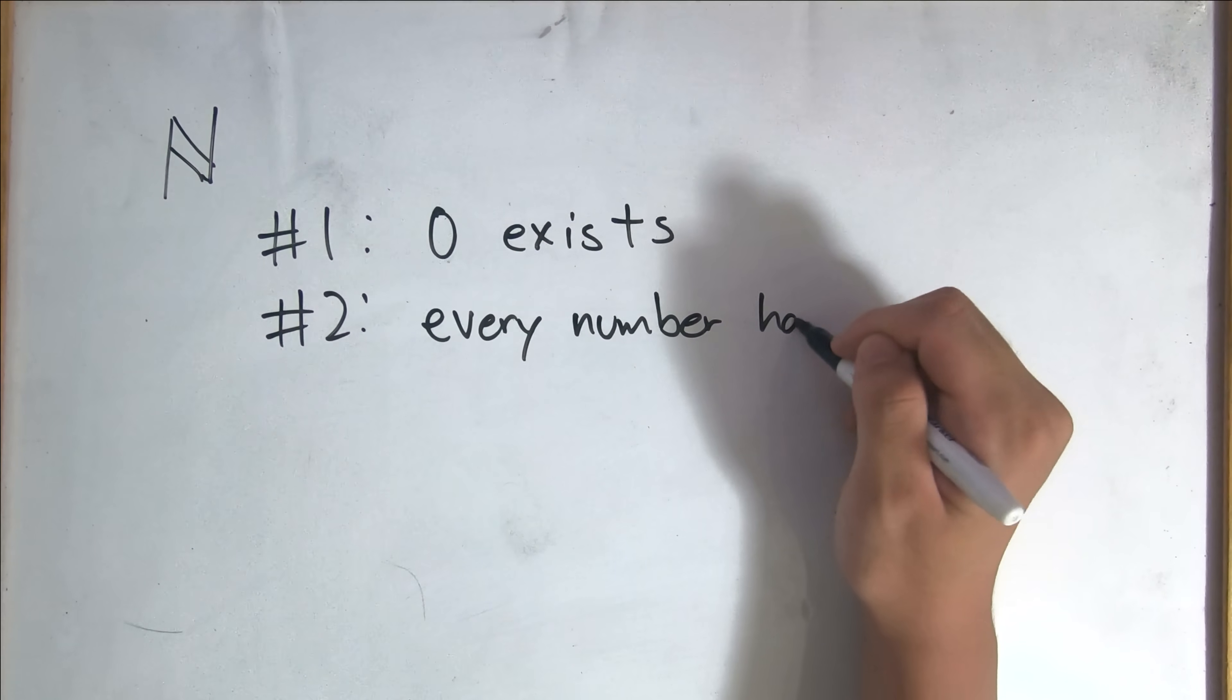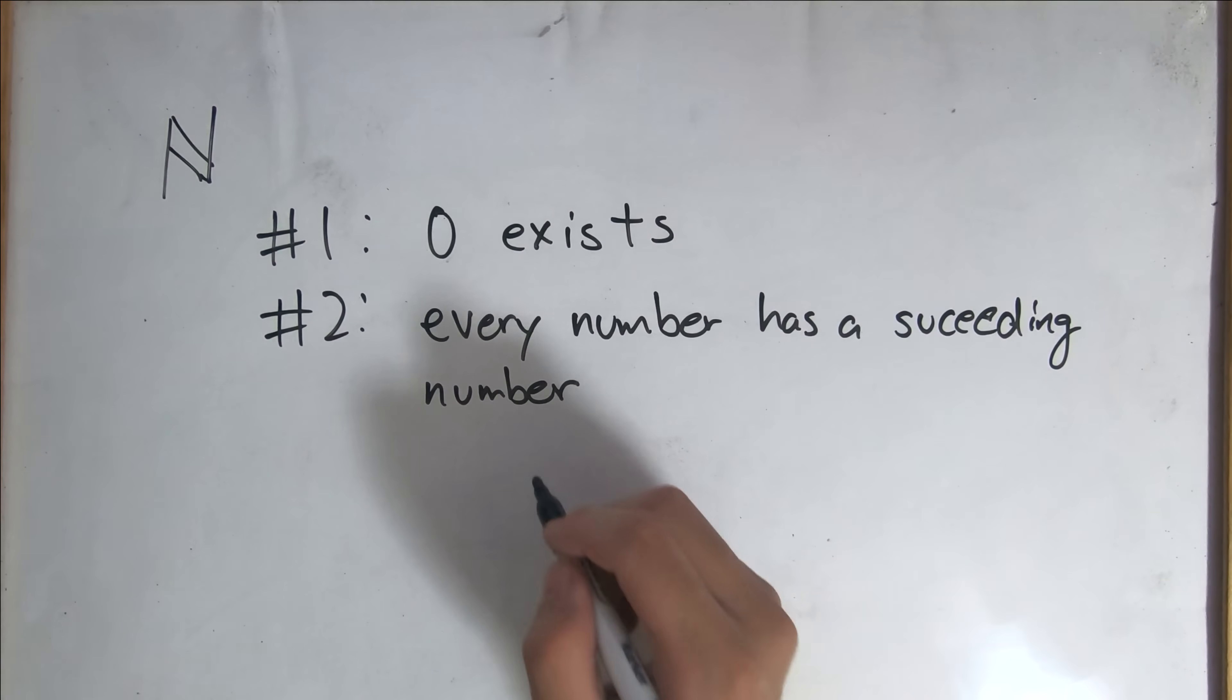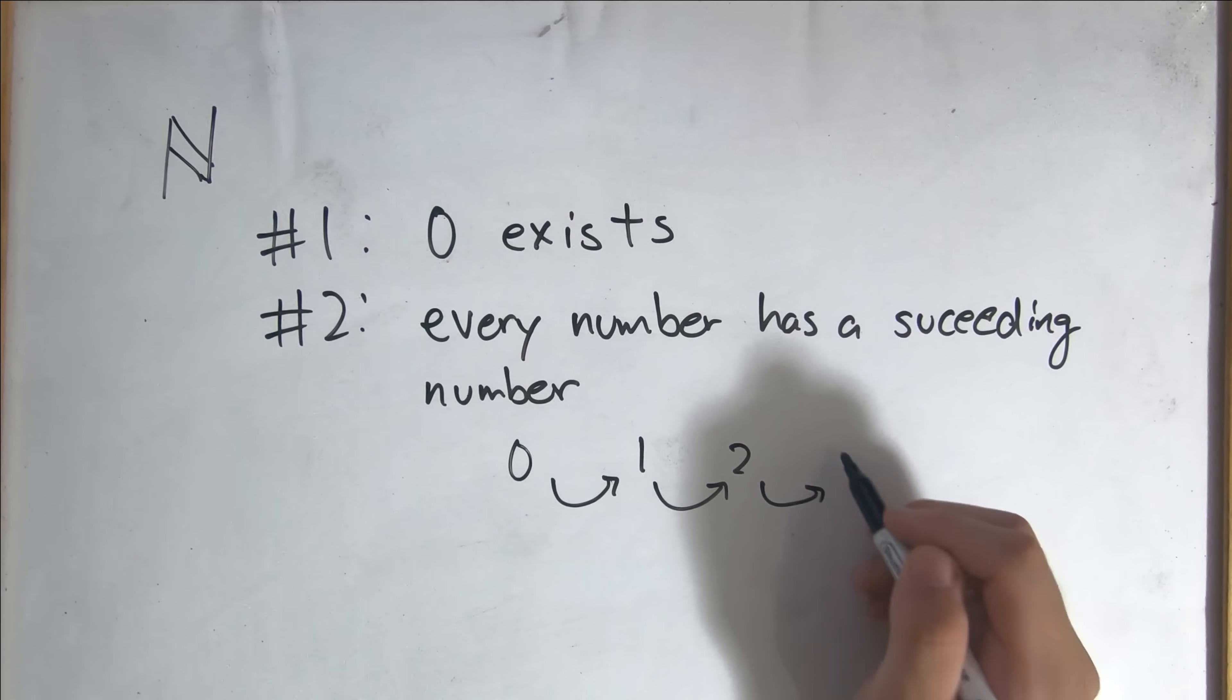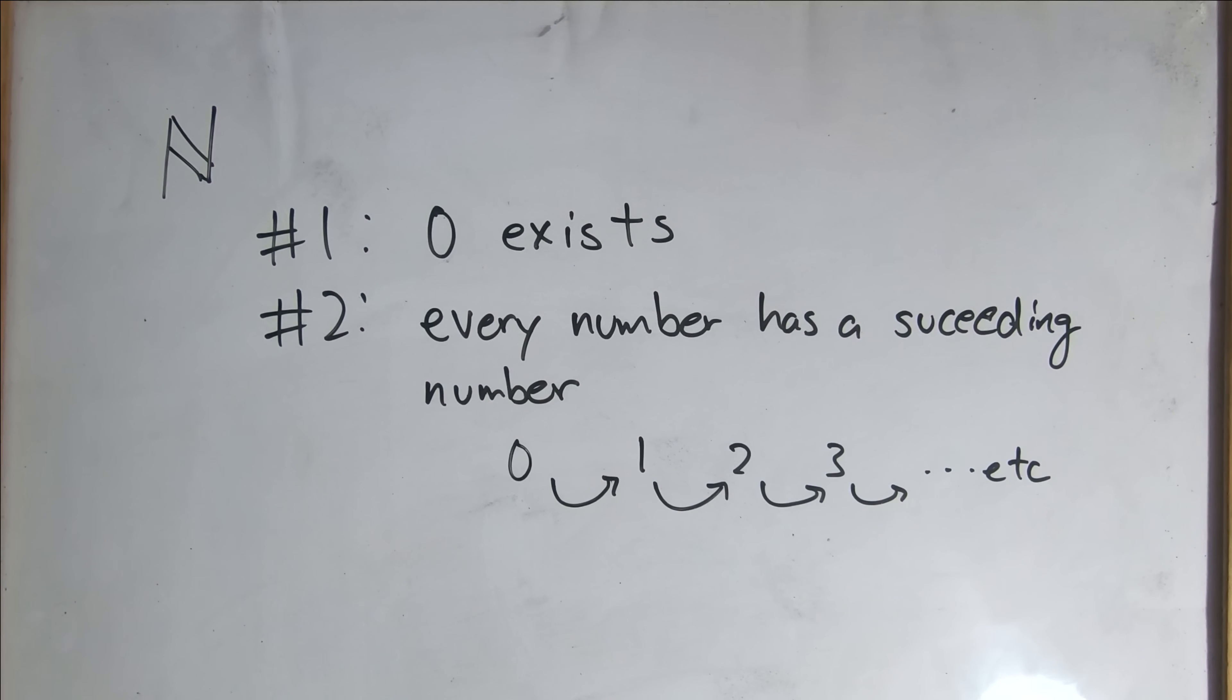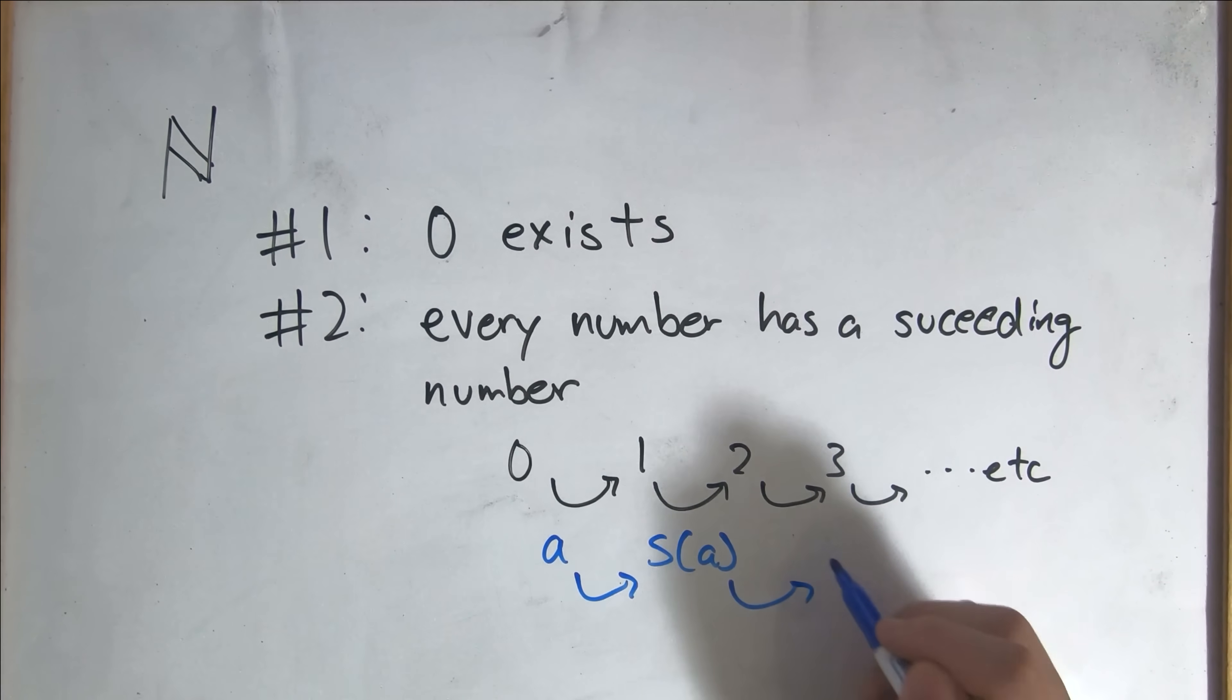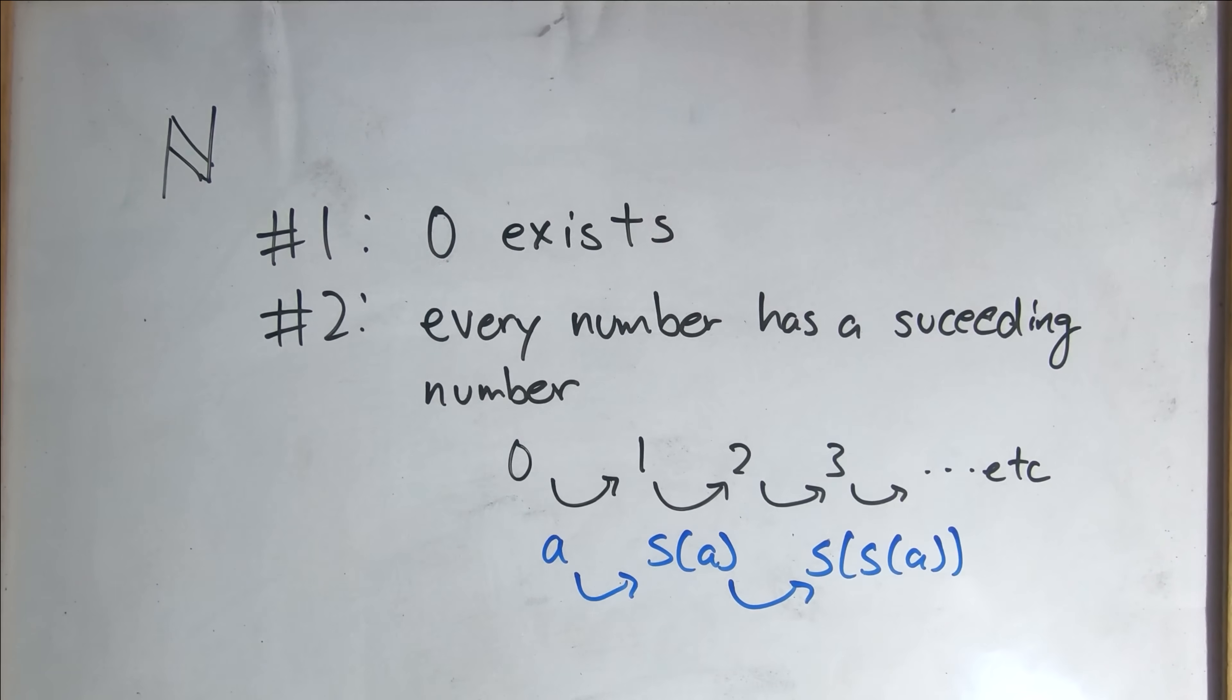Number 2. Every number has a succeeding number. For instance, we know that the succeeding number of zero is one, the succeeding number of one is two, and so on. For today's purpose, let's define the successor of some number a to be defined as s of a. So the successor of the successor of the successor of a is defined as s of a, and so on.